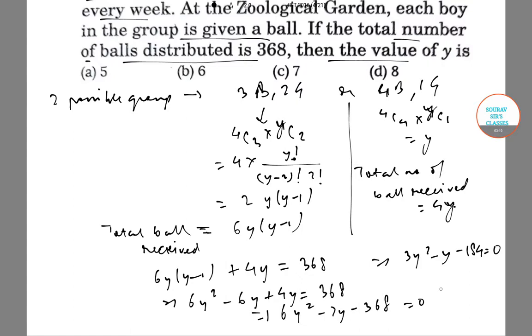On solving this, we get y to be either minus 23 by 3 or 8, but negative is not allowed. So the correct answer is 8, that is option D.